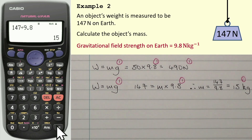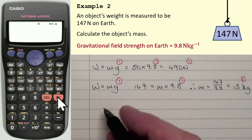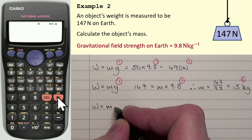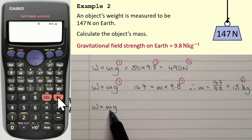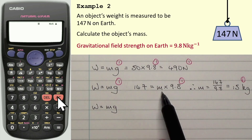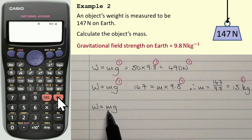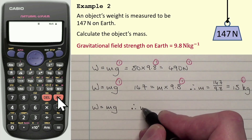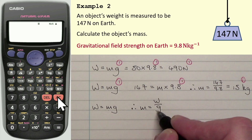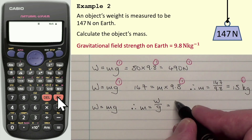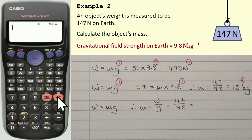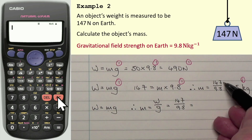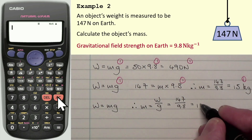If you are more confident in rearranging equations, I would still say write the equation as is from the relationship sheet first. If it's mass I want to find, mass is multiplied by g, so the opposite of multiplication is division. I divide the right-hand side by g, which means I need to divide W by g. Therefore m equals W over g. W, the weight, was 147, g was 9.8, and that gives exactly the same answer: 15 kilograms.